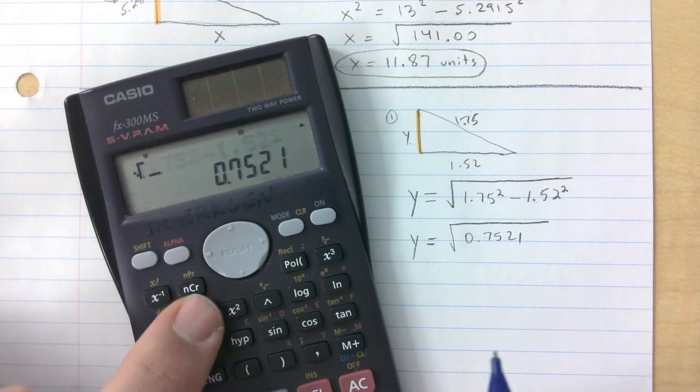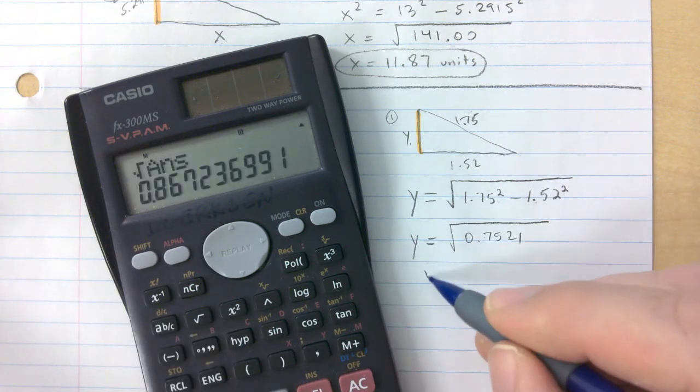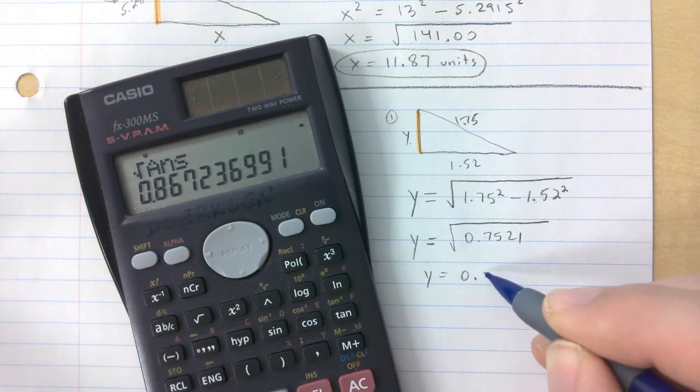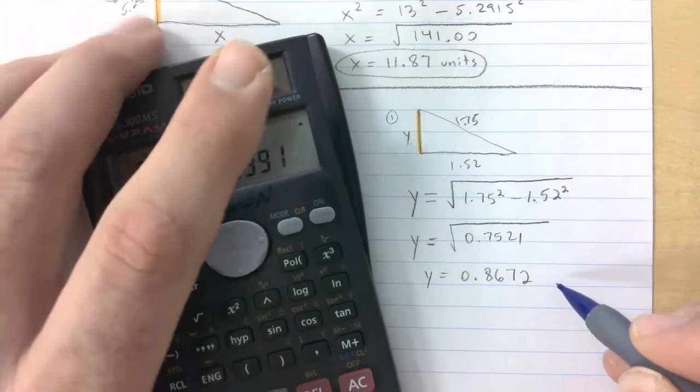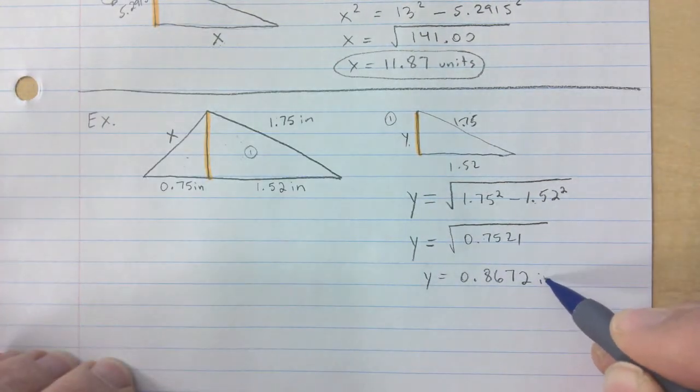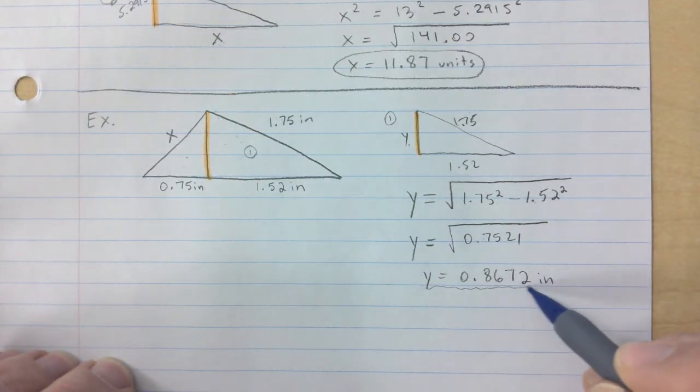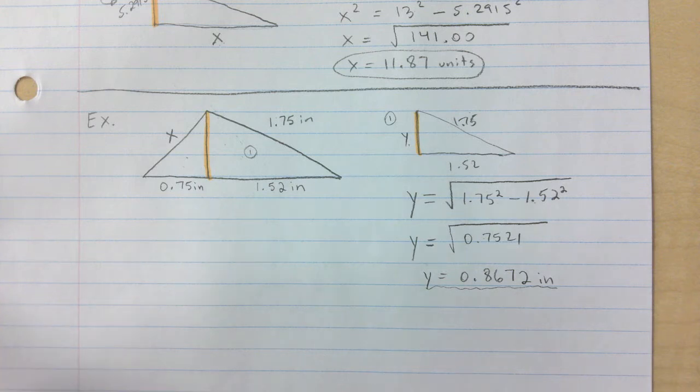That's inside the square root. Now you need to square root it. So it's 0.8672 and we are in inches. There you would have scored one mark already on a test, just getting that one.